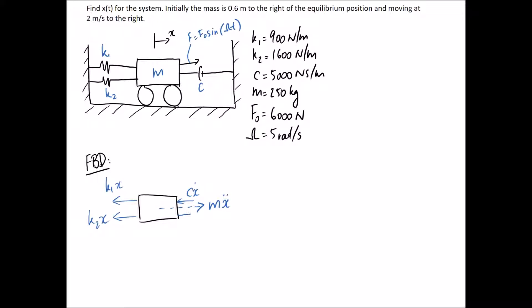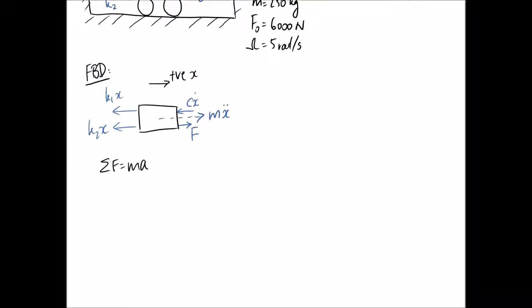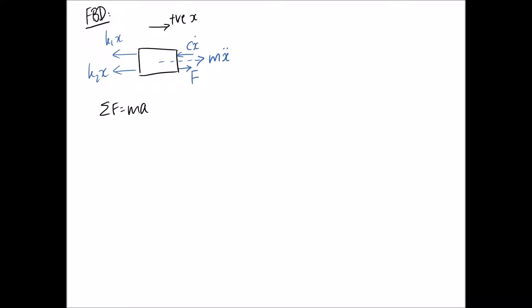The other force that we need to apply to our system is this forcing function F, and we can see it's in the positive x direction. And that completes our free body diagram in terms of what's happening in this x direction, which is where the vibration actually is.